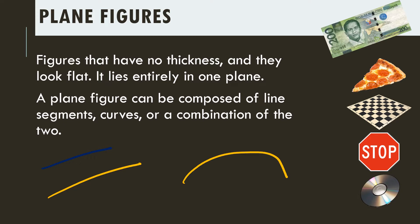A curve looks like a rainbow shape. So, plane figures can be composed of line segments, curves, or a combination of both. For example, the 200-peso bill is composed of only line segments — it's all straight. The pizza is a combination of both — it has line segments and also a curve. The chessboard has only line segments, and the stop sign also has only line segments. The CD is a curve — it's circular.